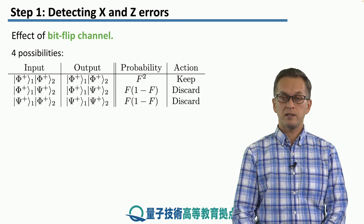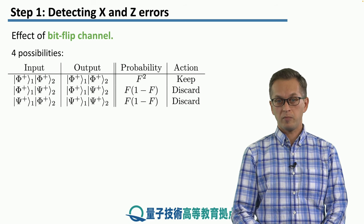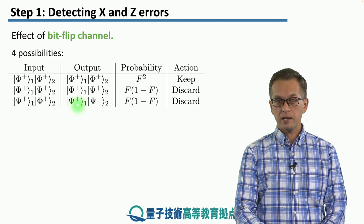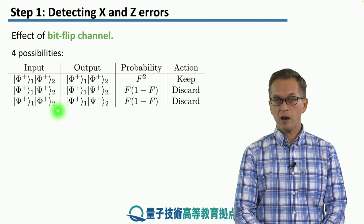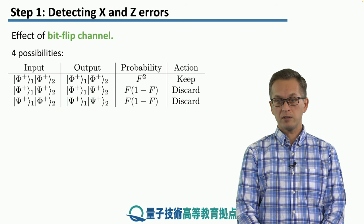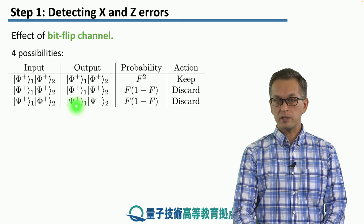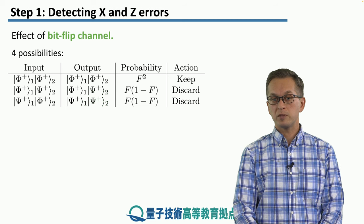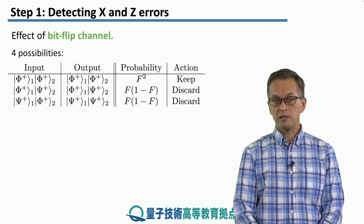The third possibility is that pair 1 is affected by the X noise, but pair 2 isn't. In this case, we get the following output prior to the measurements. And when we measure the second pair, we are told to discard, because again, pair 2 is in psi plus state, so the parity is odd.